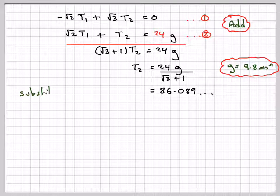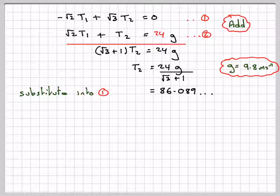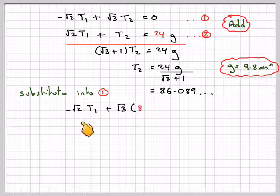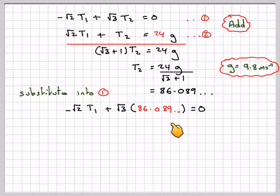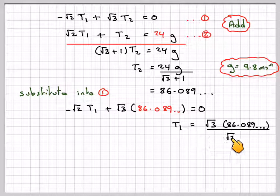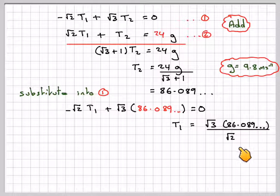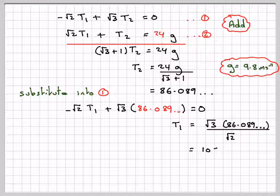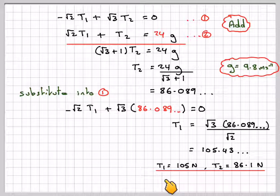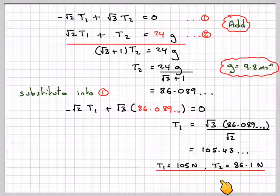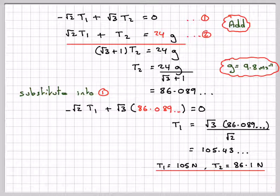If we now substitute that into equation 1, we're going to have minus root 2 T1 plus root 3 times 86.089 equals 0. So T1 will be root 3 times 86.089 divided by root 2, and I calculated that will give 105.43. And then rounding our answers off to three significant figures, T1 is 105 Newtons, T2 is 86.1 Newtons.